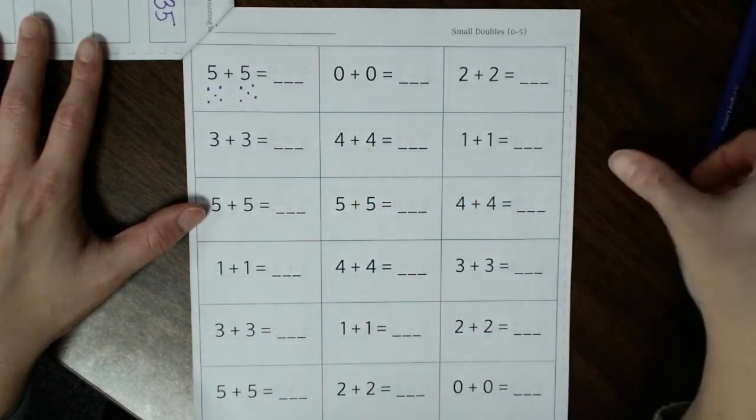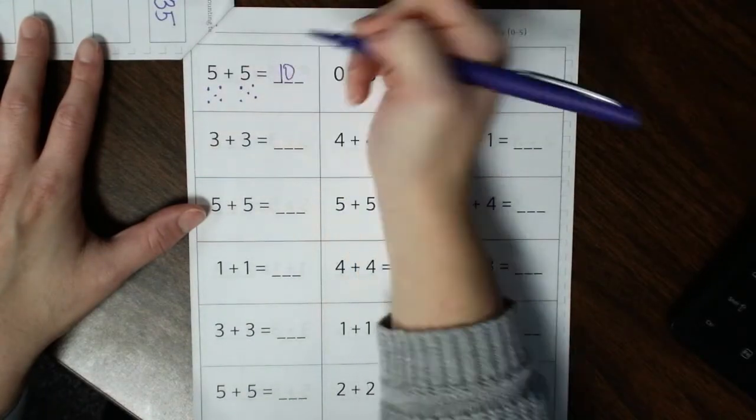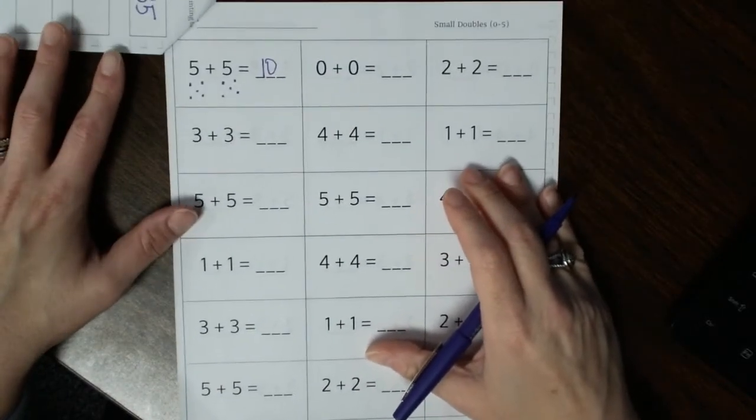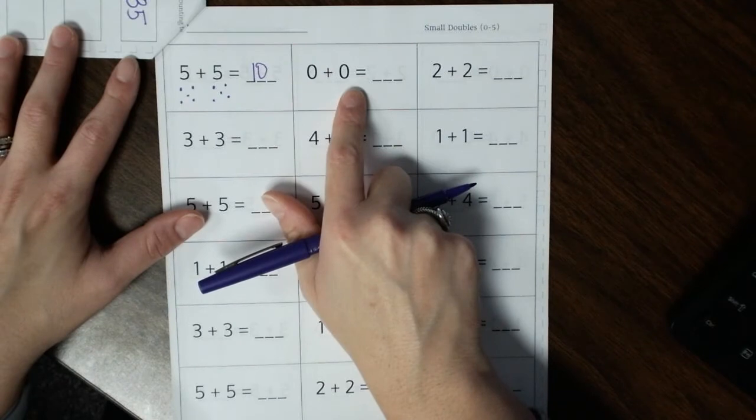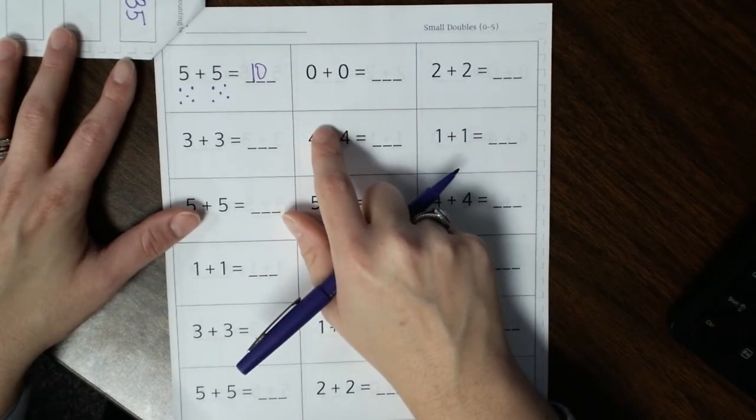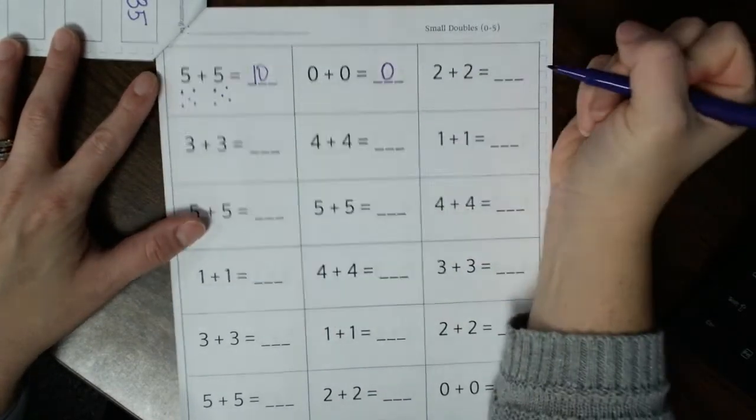So then my answer would be 10. Let me try another one. So we have 0 plus 0, so nothing plus nothing gets you 0.